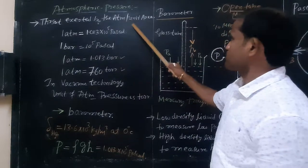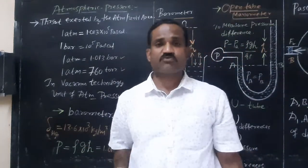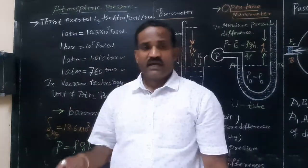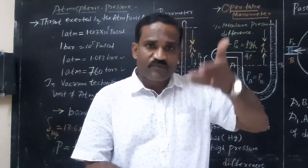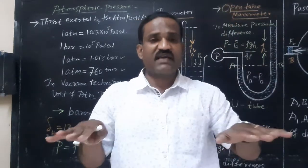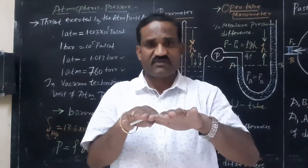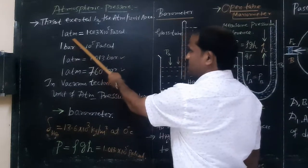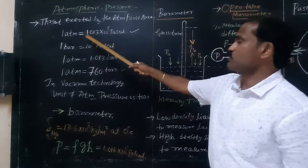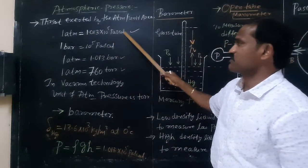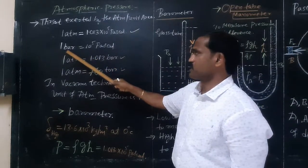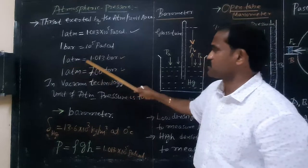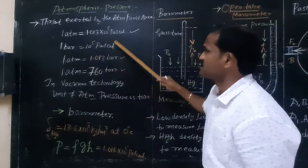Atmospheric pressure is the thrust exerted by the atmosphere per unit area. It is measured by how much mercury rises in the tube when the barometer is placed at sea level. One atmospheric pressure is equal to 1.013 × 10⁵ Pascal, which is the SI unit of pressure. Another unit is bar: one bar equals 10⁵ Pascal, so one atmosphere equals 1.013 bar.